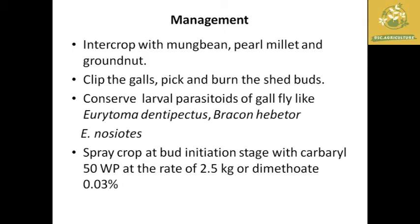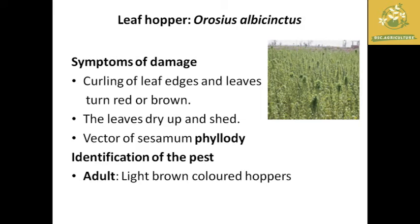Management of gall fly includes intercropping gingelly with moong bean, pearl millet, or groundnut. Collect and destroy galled buds, as they may contain parasitoid larvae and eggs. We can also conserve larval parasitoids of gall fly such as Eurytoma, Platygaster, and Bracon inhibitor. At bud initiation stage, spray Carbaryl at the rate of 2.5 kg or Dimethoate at 0.03 percent.